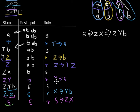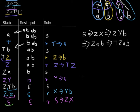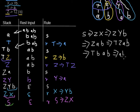The next rule is Y derives to A: Z is kept, Y is replaced by A, and B is kept. Then the next rule is Z derives to TZ, giving us TZAB. Then Z derives to B: T is kept, Z is replaced by B, giving us TBAB. Finally, applying T derives to A gives us back our input string ABAB. This completes the rightmost derivation obtained from our shift-reduce parsing.